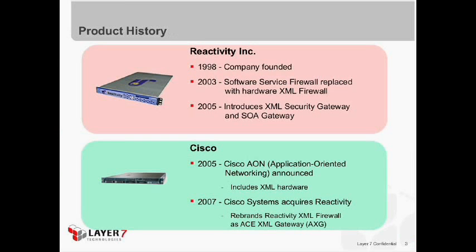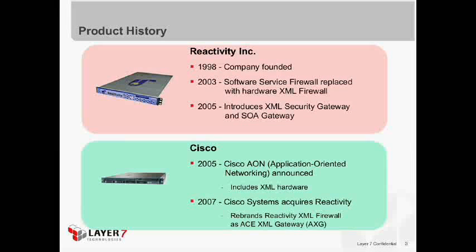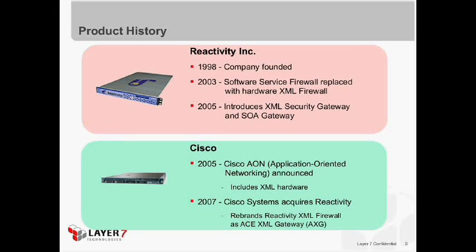Cisco Aon was not very successful in the marketplace — I encourage you to search what analysts thought of it. In 2007, rather than building their own product, Cisco decided to buy. They purchased the entire Reactivity company and rebranded the Reactivity XML firewall as the ACE XML Gateway — referred to throughout this presentation as AXG. The product originally came from Reactivity and has a fairly long lineage. Cisco took it to market in 2007.